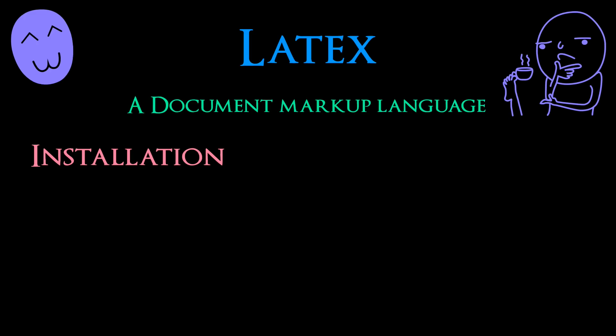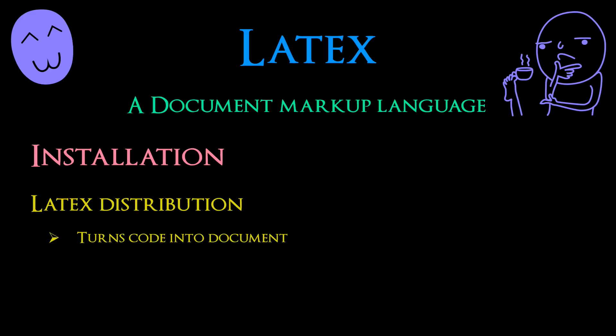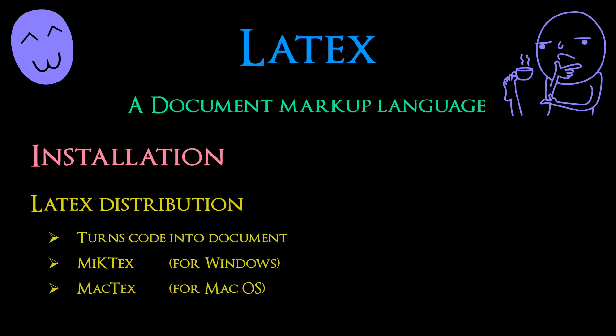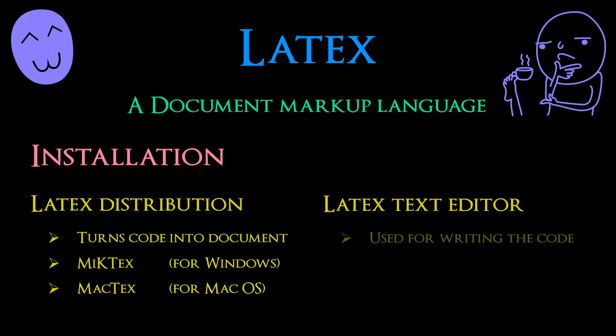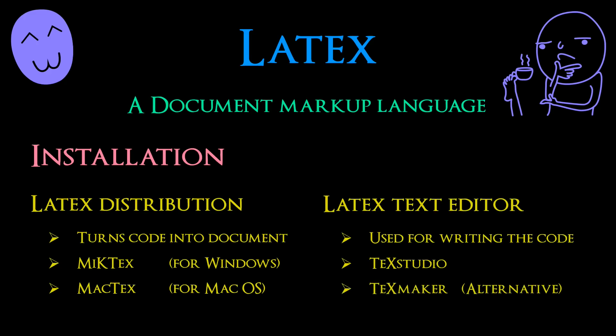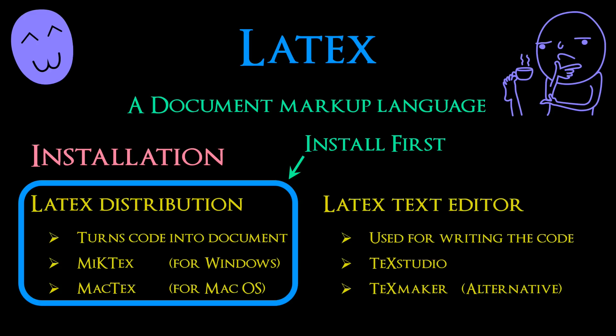In order to use LaTeX you need to install two free software packages. The first is a LaTeX distribution, which turns your code into a readable document. The LaTeX distribution I use is MiKTeX, which is for Windows. If you are on a Mac you can use MacTeX. The second software you need is a LaTeX text editor used for writing your code. I use TeXStudio, but an alternative is TeXMaker, and both are available for Windows and Mac OS. The LaTeX distribution should be installed first, followed by the LaTeX text editor.